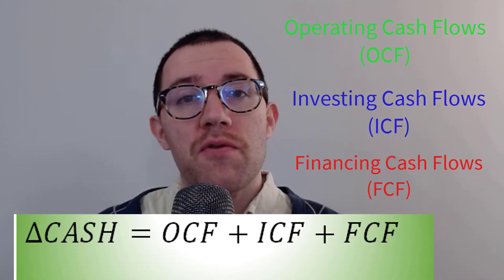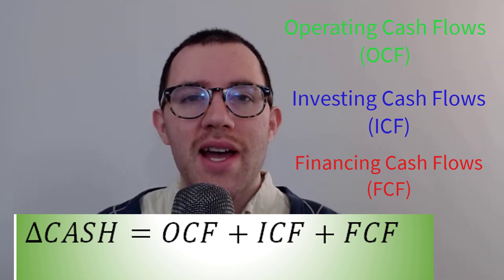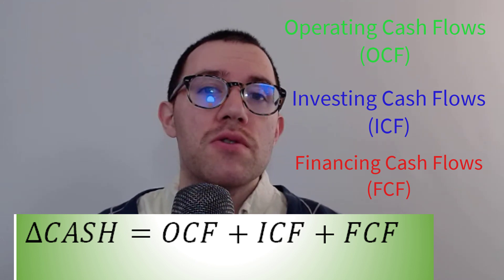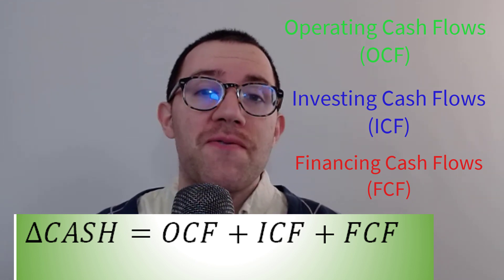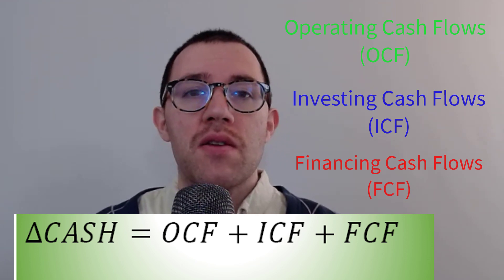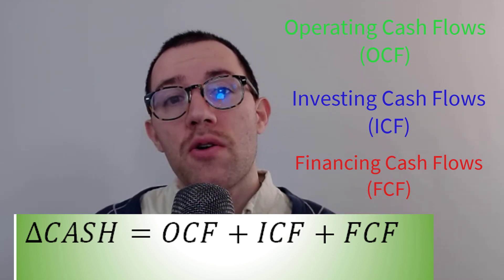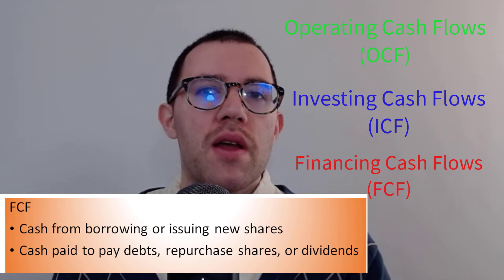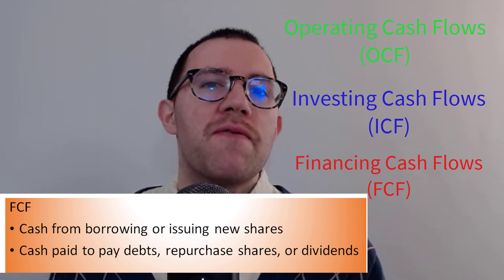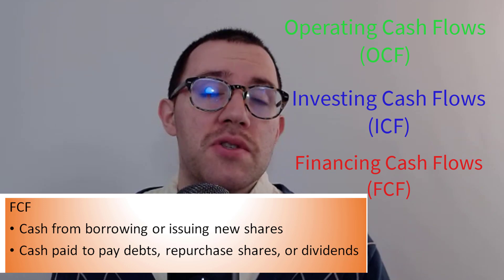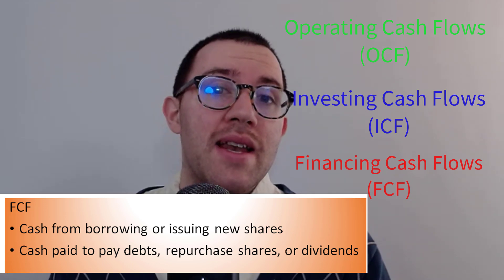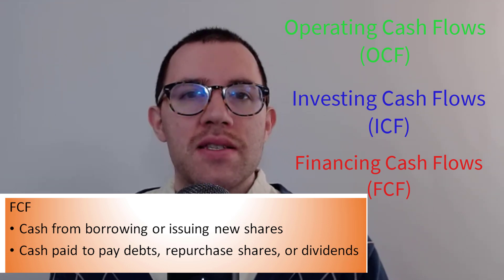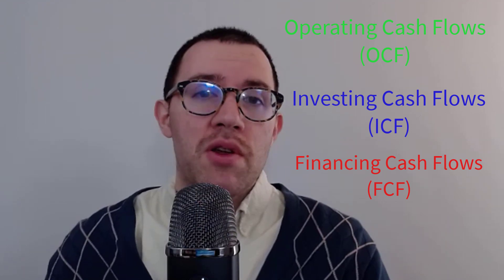I'm going to talk about them in reverse order, because the operating cash flow section is actually the hardest to understand for most people. Financing cash flows are pretty easy. A company needs financing by either borrowing money — that's debt — or going to the equity market and issuing stock. Any money you get from borrowing or issuing new shares is a positive financing cash flow, and any money you spend paying back debt, buying back your own shares, or paying dividends is a negative financing cash flow — you're giving money back to those equity or debt holders.